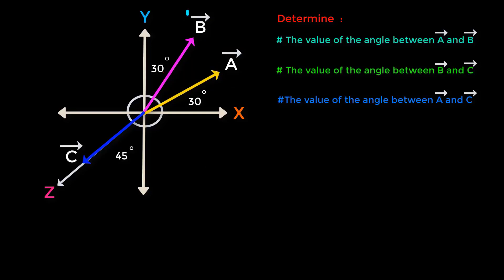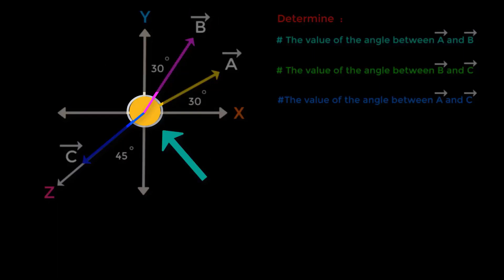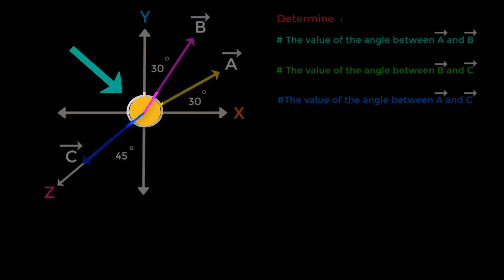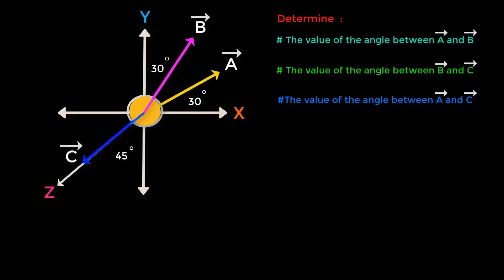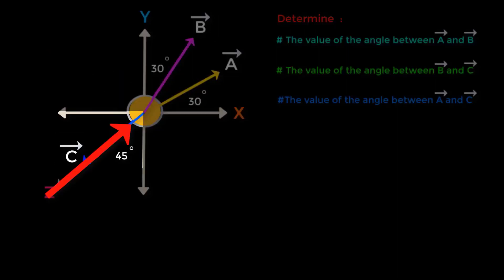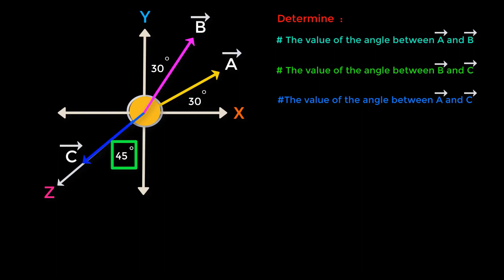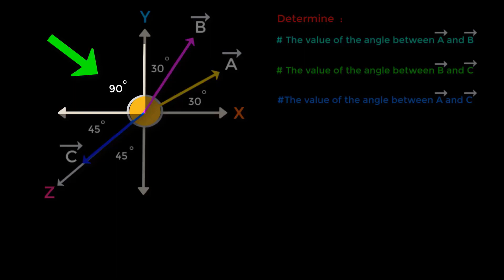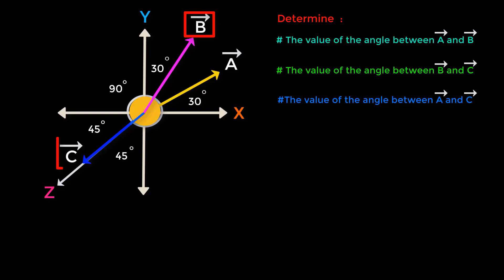Now we will find the angle between vector B and vector C. There are also two angles between them. The angle greater than 180 degrees cannot be the angle, so we take the other angle. This is a 90-degree angle. If we subtract 45 degrees from 90 degrees, we get 45 degrees. So this angle is 45 degrees, and this adjacent angle is 90 degrees. Therefore, the value of the angle between vector B and vector C is 45 degrees plus 90 degrees plus 30 degrees, which equals 165 degrees.